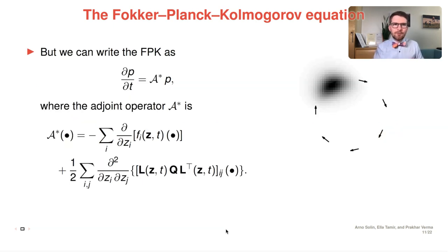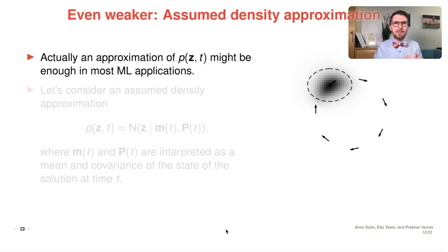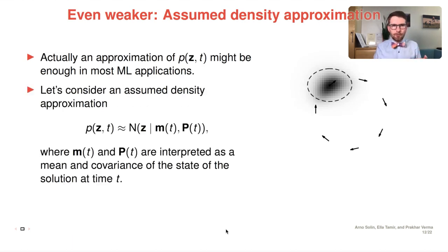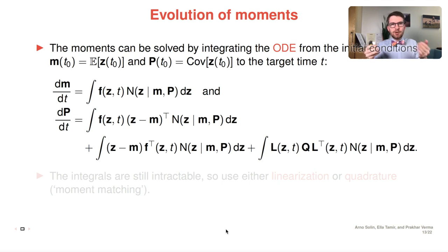What we do is that we formulate the Fokker-Planck-Kolmogorov equation as an evolution equation and match the moments for that evolution. That is, we do Gaussian approximations to capture the first two moments. We can do that by moment matching and write down the dynamical evolution equations for the first and second moment of the probability density function. That leads to this set of ordinary differential equations.